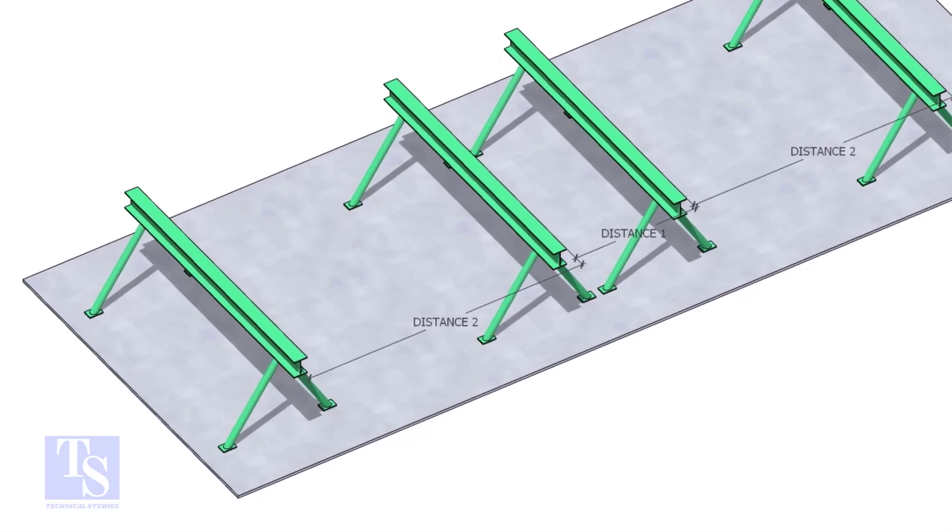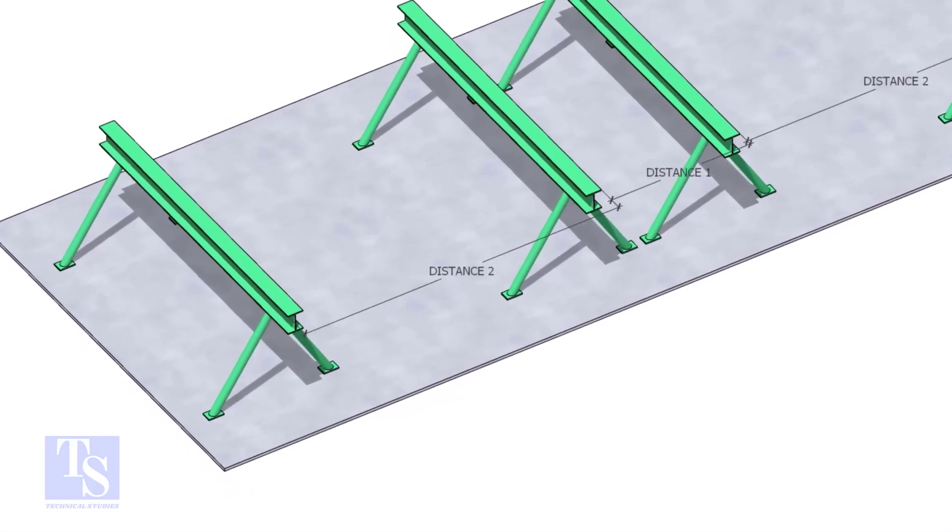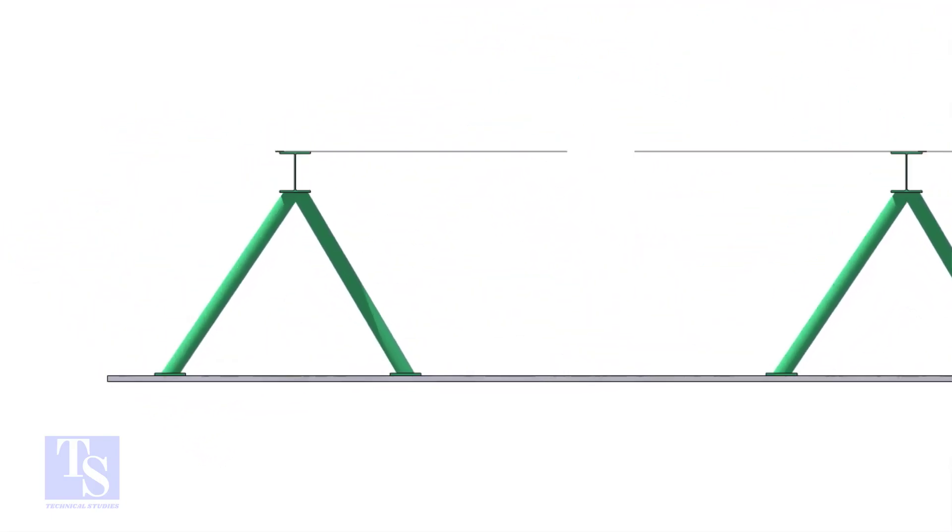Distance 1 shall be 1 meter to 1.2 meters. And distance 2 shall be 2 to 2.5 meters, less than the random pipe.